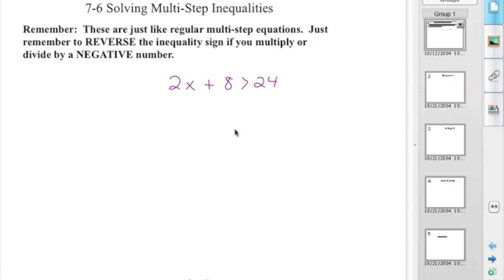Lesson 7.6 is solving multi-step inequalities. This is the last lesson in Chapter 7, and we're going to combine everything that you learned throughout Chapter 7. Remember, these are just like regular multi-step equations. Just remember to reverse the inequality sign if you multiply or divide by a negative number. That is the only difference between these equations and the ones you did for your poster earlier this year.